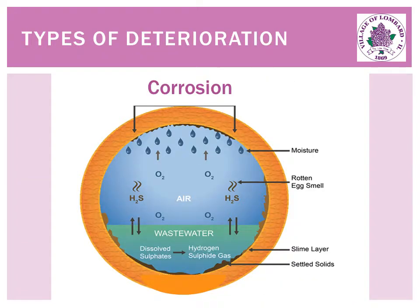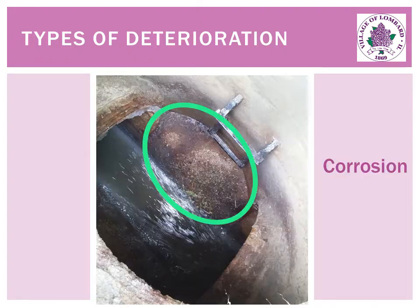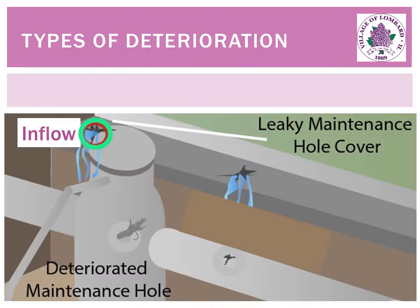There are two common problems that arise as manholes age. The first is corrosion — the slow breakdown of the manhole's concrete walls by chemical action. If continued unchecked, it can weaken the manhole's walls. The exposed stone aggregate here shows corrosive gases have eaten away at the previously smoothed surface.